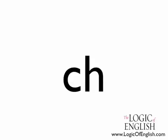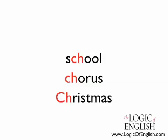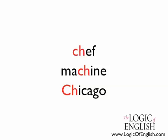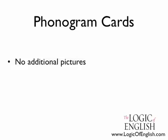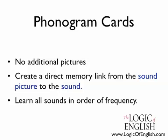Another example of this is the phonogram CH. In school, I was taught that this says CH, as in chin, chime, and champion. What about school, chorus, and Christmas? In these words it's saying K. And in chef, machine, and Chicago, it's saying SH. CH actually says three sounds: CH, K, and SH. The words where it says K are not exceptions — they're Greek-based words. The words where it says SH are not exceptions either — they're French-based words. When teaching, it is important that the phonogram cards have no additional pictures, that we teach students a direct memory link from the sound picture to the sound, and that we teach all of the sounds in the order of frequency.